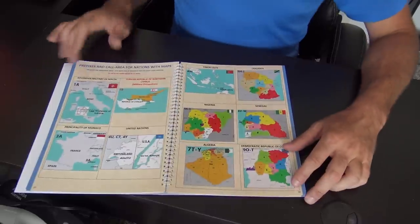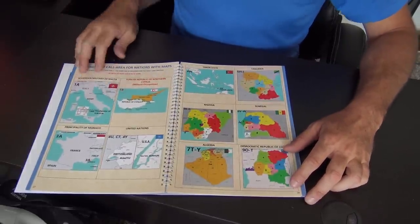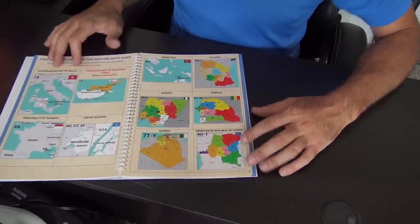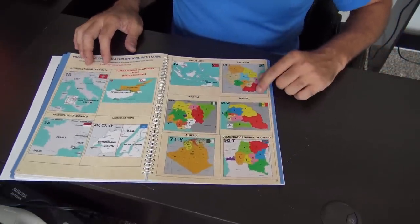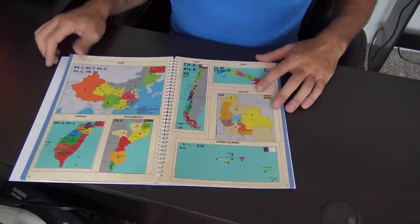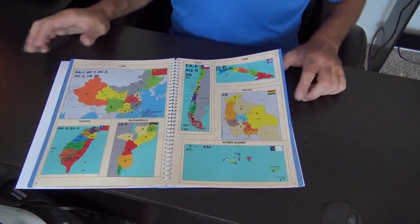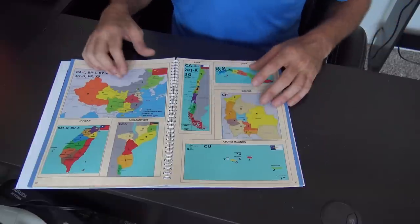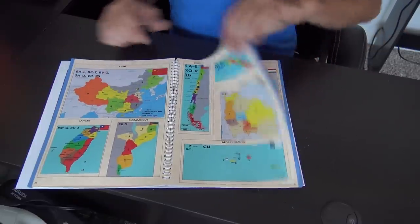So then we go like this, prefixes and call area for nations with maps. That's pretty cool. So Republic of Cyprus, 1B and 1A is over here. Italy, Rome, and the maps, Algeria, Dominican Republic of Congo, no, Democratic Republic of Congo. Senegal, Nigeria, stuff like that, right? And you know what? If it ain't for ham radio, you can still learn from this thing, man, because there's a lot of countries I want to learn about and look at all the little regions and stuff.